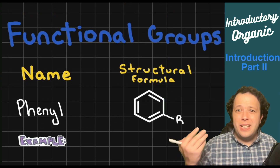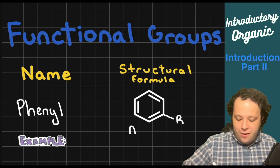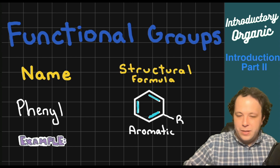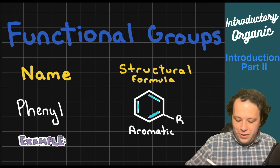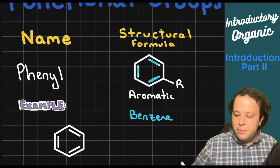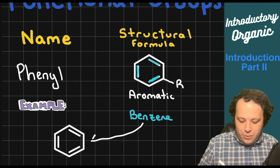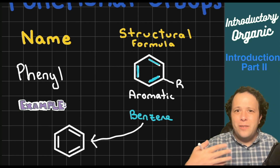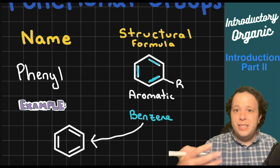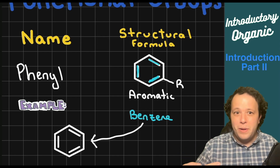Our last functional group is the phenyl group, also known as an aromatic ring or benzene ring. It has three alternating double bonds within the structure. This is a very specific and special shape — aromatics are extremely stable groups. Benzene rings are commonly used in pharmaceutical compounds to help stabilize a structure so it can survive long enough to deliver its effects in the body.